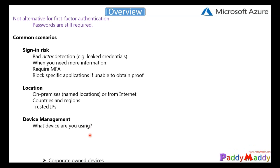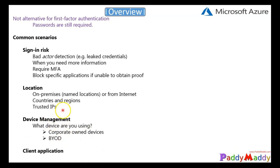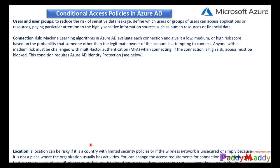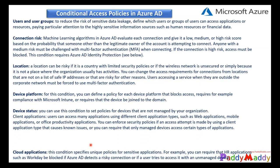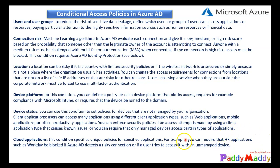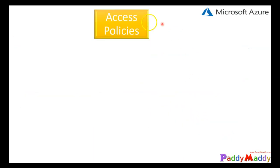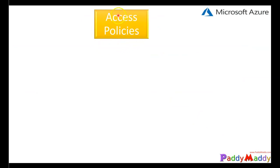Another common scenario is device management. If the user is coming from a corporate-owned device, we might not need to validate multi-factor authentication. But if the user is coming from a bring-your-own device, we can configure conditions to block or add another layer of security before granting access. The last scenario would be client applications hosted within Azure or on-premises.